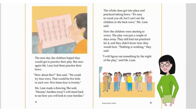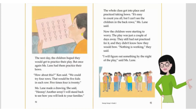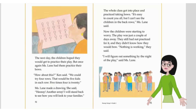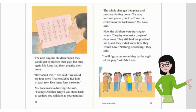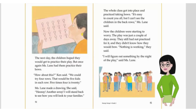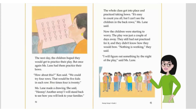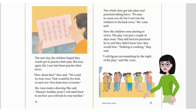Next day, the children hoped they would get to practice their play. But once again, Ms. Lane had them practice their bows. 'How about this?' Ken said. 'We could try four rows. That would be five kids in each row. Five times four is 20.' Ms. Lane made a drawing. 'Hooray, another array!' The whole class got into place and practiced taking bows. 'It's easy to count you all, but I can't see the children in the back row,' Ms. Lane said. Now the children were starting to worry. The play was just a couple of days away, and they still had not practiced for it.